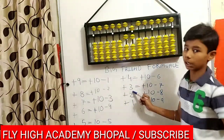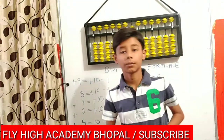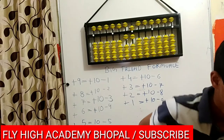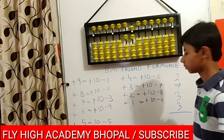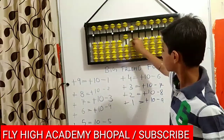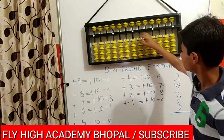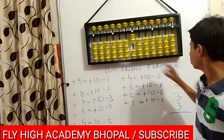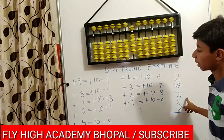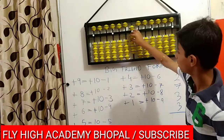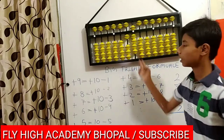Now plus 3 formula: it is equal to plus 10 minus 7. The question of plus 3 formula is 2, 7, 3, and 3. So again in this question, plus 3 formula is applied: plus 2, plus 7, and now plus 3, so the formula is plus 10 minus 7. And again 3 from here. So the answer is 19.